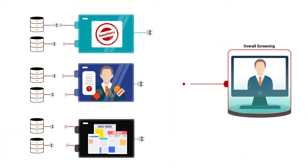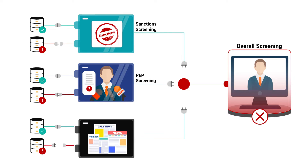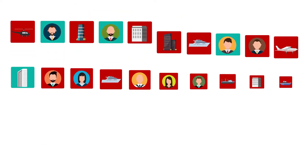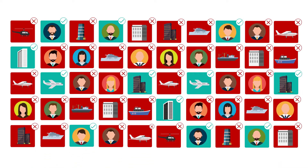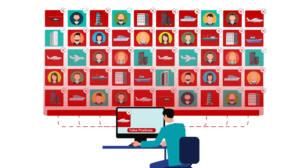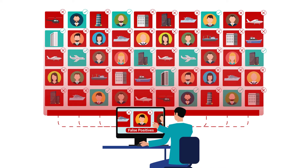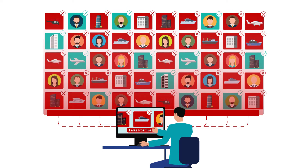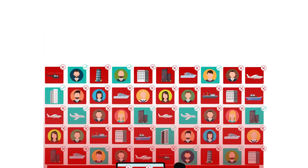This is generally done through disjointed, siloed systems and processes for sanctions, PEP, and adverse media screening. The complexity only gets compounded by the large number of false positives generated in the process, restricting the institution's ability to scale up its operations and transactions in a secure, transparent, and regulatory-compliant manner.